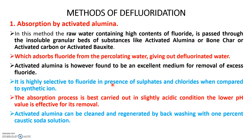Activated alumina provides excellent removal of fluoride content. The fluoride present is highly selective with sulphides and chlorides when compared to synthetic ions, so it is very attractive to sulphides and chlorides. Even in acidic conditions, this method provides excellent removal of fluoride. When the bed is backwashed with caustic soda, there is regeneration of the activated alumina. This is the technique of removing excessive fluoride content from water using activated alumina.